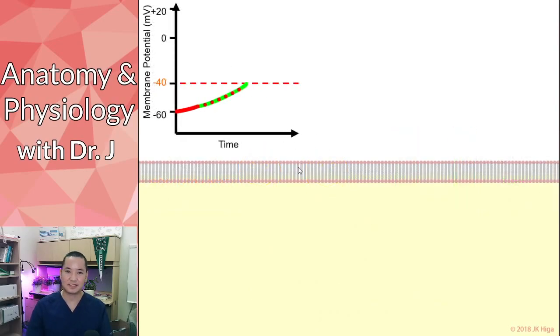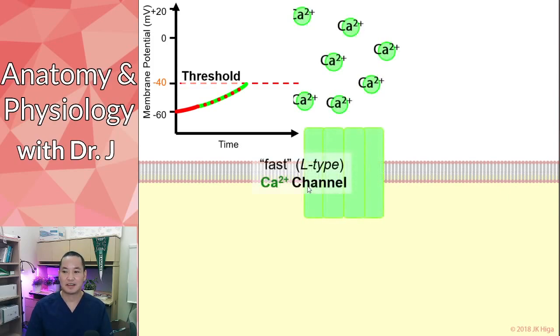Now, what happens after here? Now we get to that action potential. So it reaches that threshold, and now it's going to open a different type of calcium channel. Now, do I want you to know T versus L type? If you're going on to advanced classes, it might be worth your while. But what I want you to know is that this channel that opens here is a calcium channel.